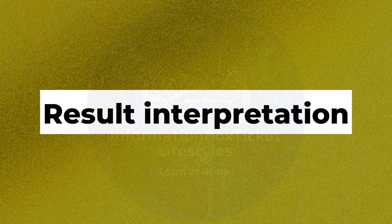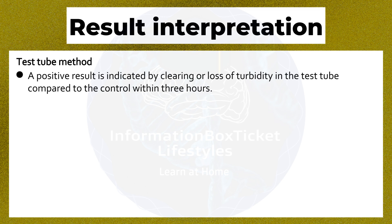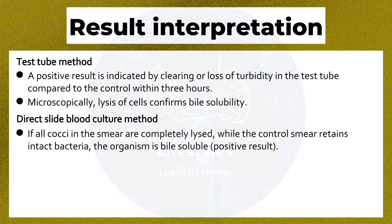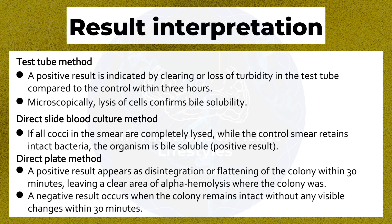Result Interpretation — Test Tube Method: A positive result is indicated by clearing or loss of turbidity in the test tube compared to the control within 3 hours. Microscopically, lysis of cells confirms bile solubility. Direct Slide Blood Culture Method: If all cocci in the smear are completely lysed while the control smear retains intact bacteria, the organism is bile soluble. Direct Plate Method: A positive result appears as disintegration or flattening of the colony within 30 minutes, leaving a clear area of alpha hemolysis. A negative result occurs when the colony remains intact without visible changes within 30 minutes.